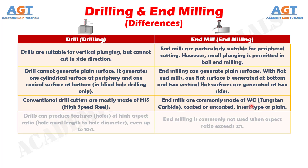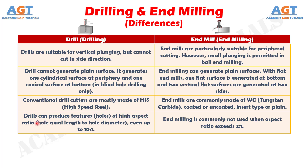Number eight: drills can produce features, i.e., holes, of high aspect ratio — hole axial length to hole diameter — even up to 10 to 1 ratio, whereas end milling is commonly not used when aspect ratio exceeds 2 to 1 ratio.